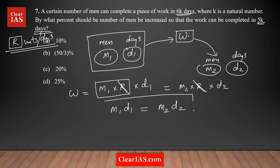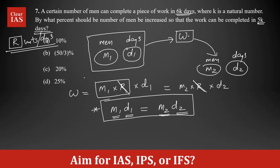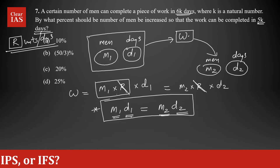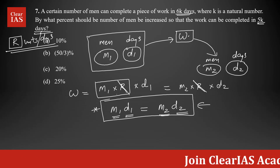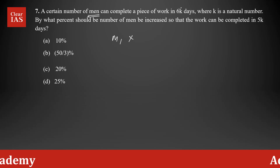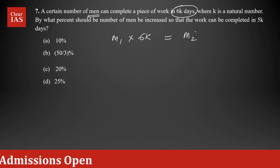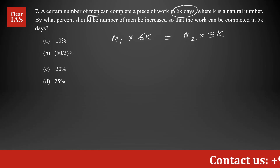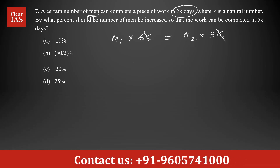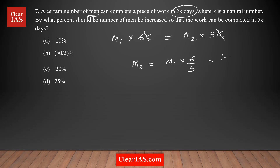Most of you are aware of this man-days concept. Whenever you have a group of people working the same work, you can always equate M1 × D1 = M2 × D2. Applying this to our question: M1 × 6K = M2 × 5K. You can see that K cancels out, and M2 = M1 × 6/5, which equals 1.2 M1. So M2 is 1.2 M1 — there is definitely an increase.